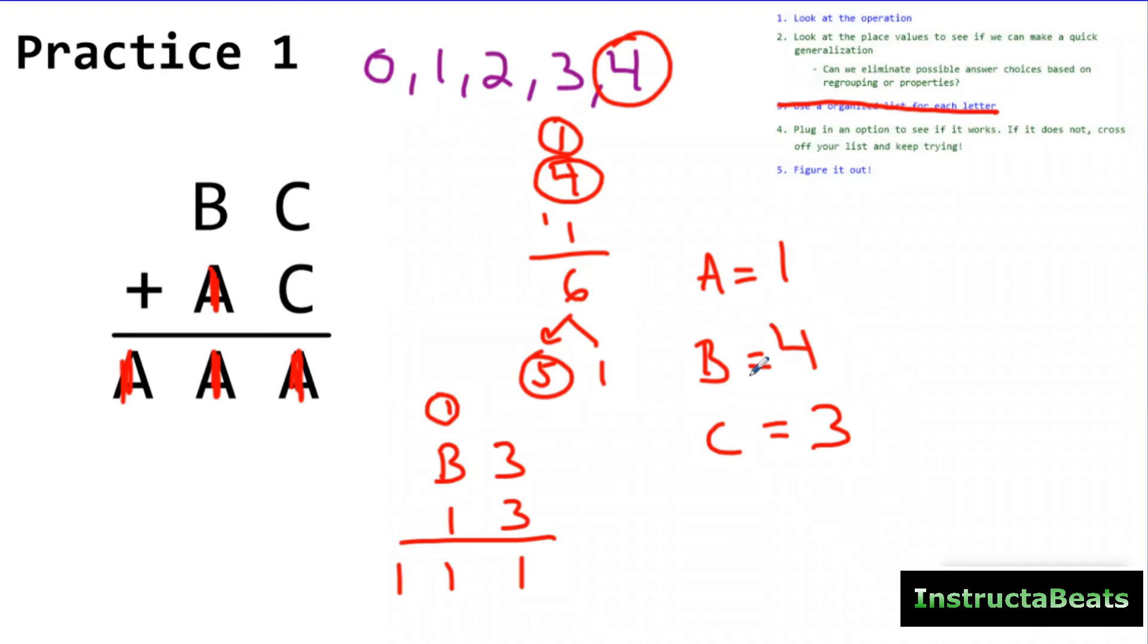I love doing these cryptorhythms in base 5 because it's really focusing on your understanding of what's happening when you're regrouping. You can't just understand the standard algorithm and the shortcut of doing base 10. You have to think about what's happening when you're regrouping. But it's also fun because you don't have as many numbers to try. So I didn't even have to make an organized list here. I just did step number 1, step number 2, and then I plugged in the option to see if it worked, and I figured it out. Let's take a look at practice number 2.